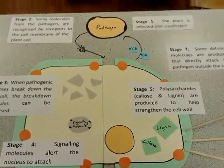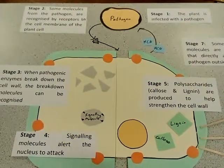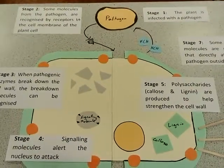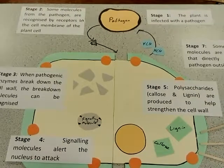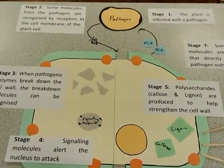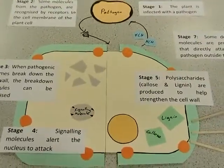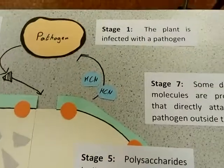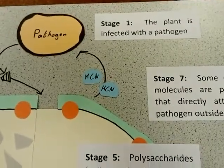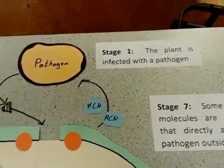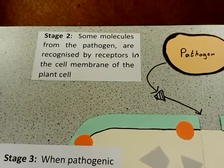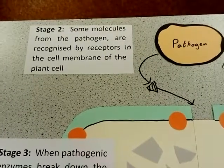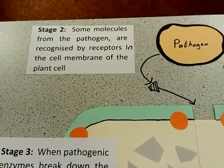Plant defences. Plants do not have an active immune system, but individual cells look at defending themselves from pathogens in a number of ways. It can be split up into seven distinct stages. The first stage is where the cell is infected with the pathogen. The second stage is where molecules from the pathogen are recognised by receptors in the cell membrane of the plant.